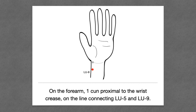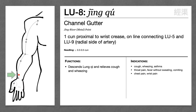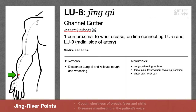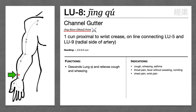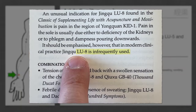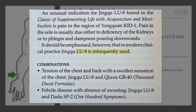Lung 8 is one cun proximal to the wrist crease. It's the Jing River and metal point of the lung channel. Classically, Jing River points are used to treat cough, shortness of breath, and fever and chills. But Lung 8 is actually not a commonly used point — Dedman says that Lung 8 is an infrequently used point, though Maciocia mentions it's good for problems of the throat.